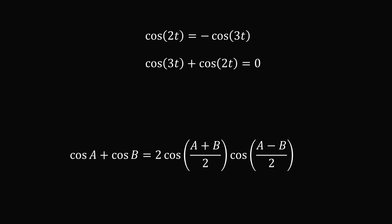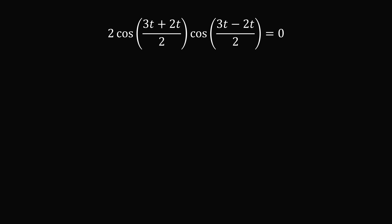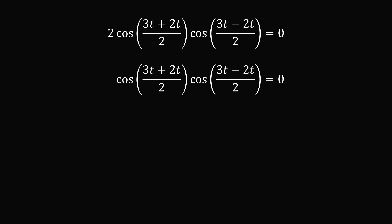We have a sum of cosines which we want to turn into a product. The formula is: cosine of a plus cosine of b equals 2 times cosine of one-half of a plus b, multiplied by cosine of one-half of a minus b. Here a equals 3t and b equals 2t. Substituting, we get 2 times cosine of 5t over 2 times cosine of t over 2 equals 0. Dividing both sides by 2, the equation simplifies to cosine of 5t over 2 multiplied by cosine of t over 2 equals 0.